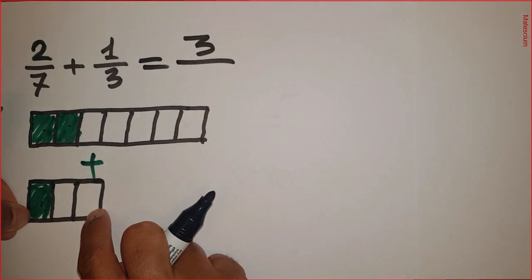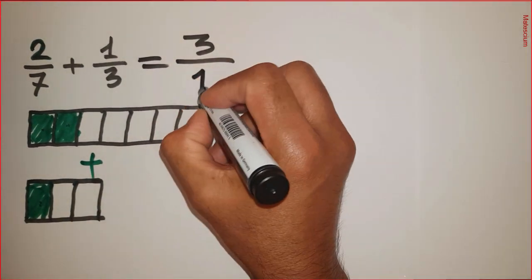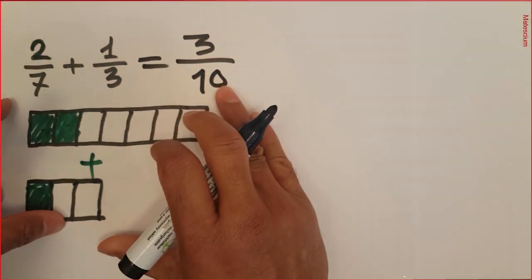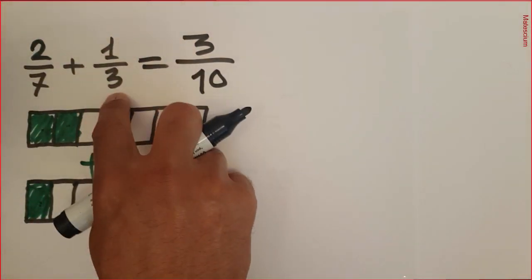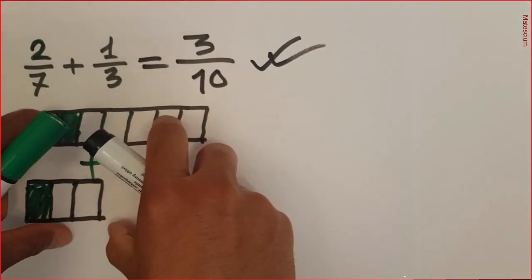Here we have 7. Here we have 3. That means 7 plus 3 is 10. So according to this graphical explanation 2 over 7 plus 1 over 3 means 3 over 10. This is the answer according to this graphical explanation.